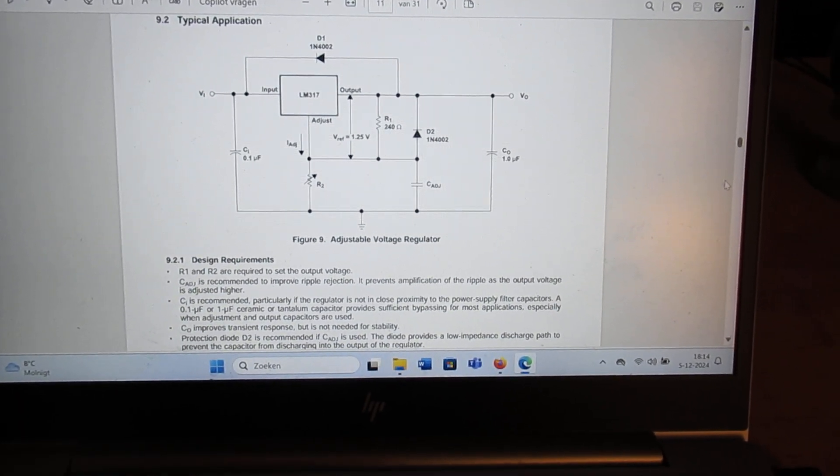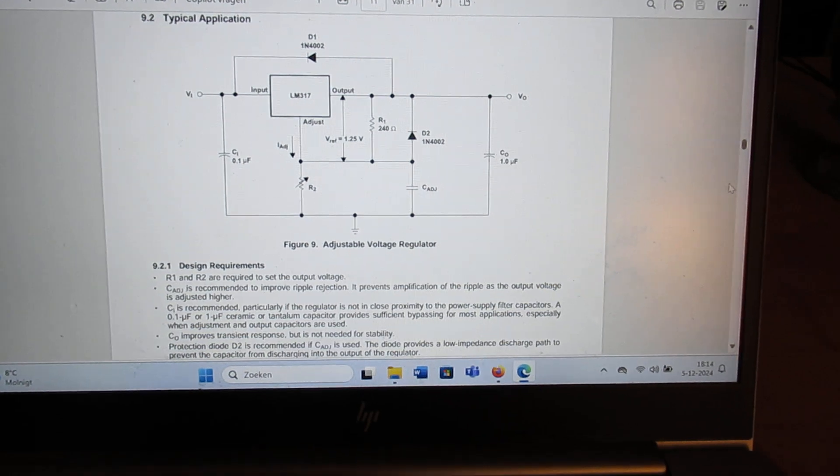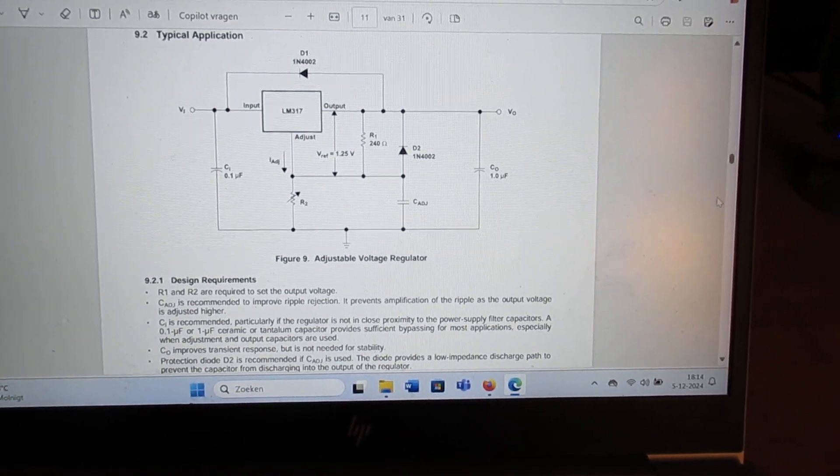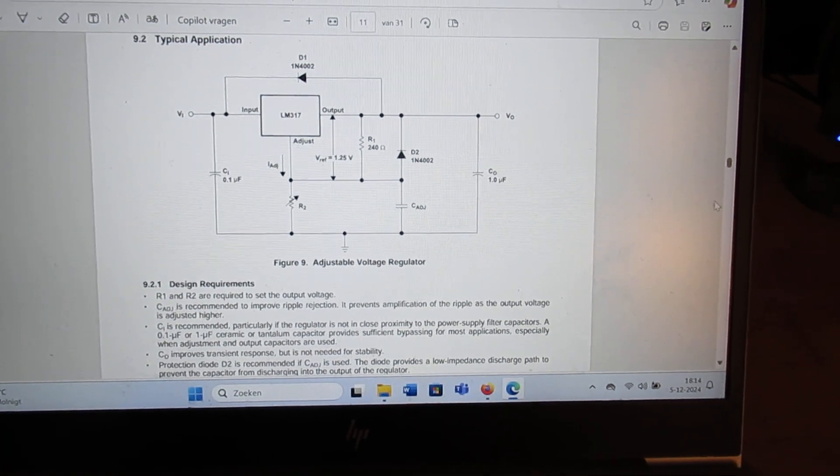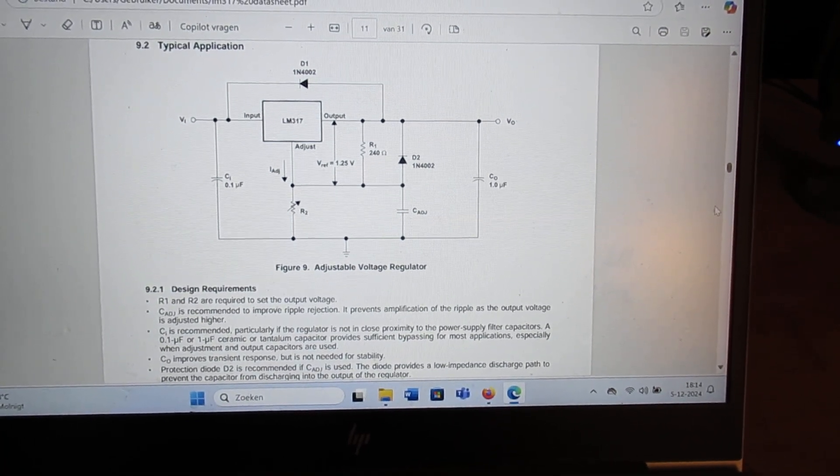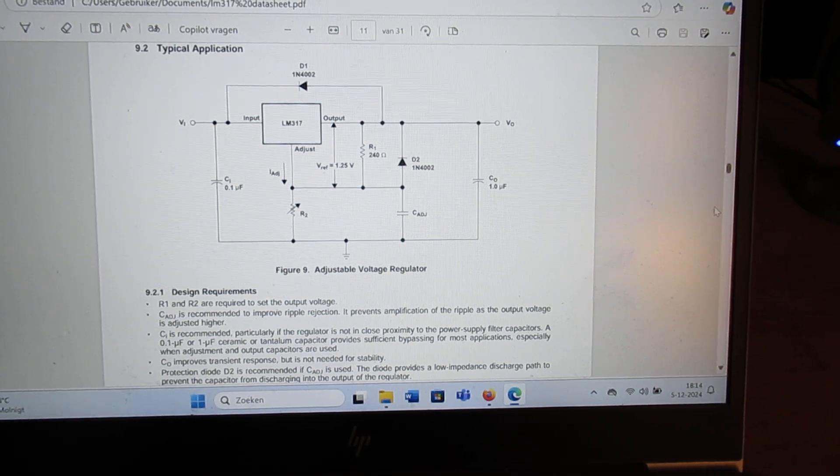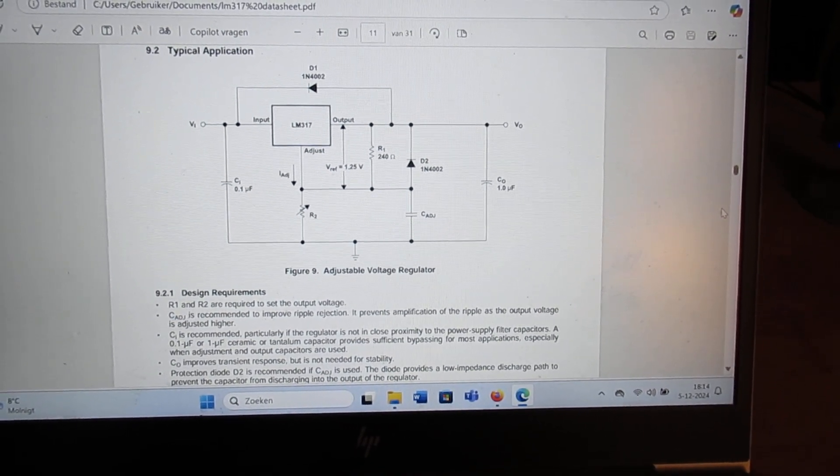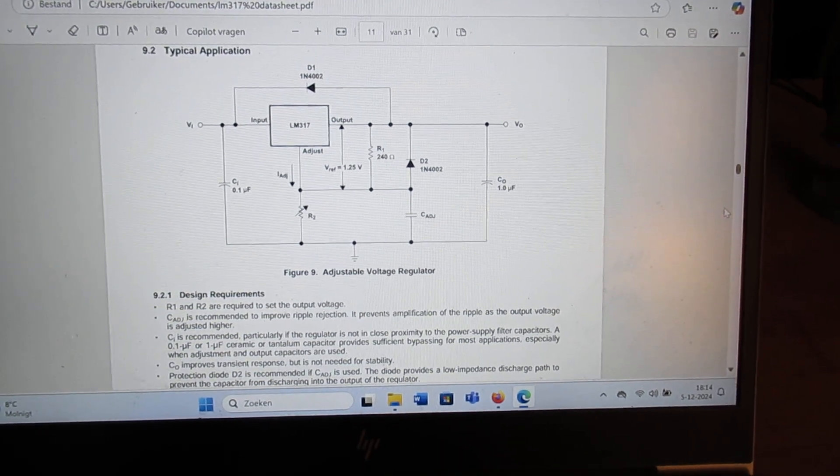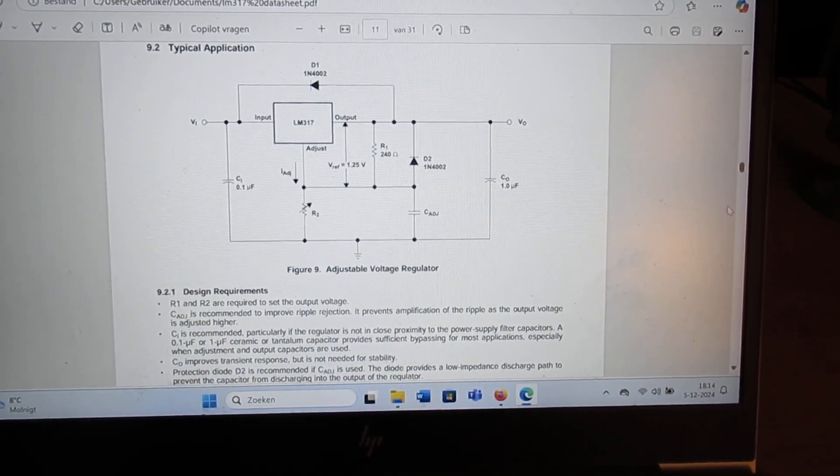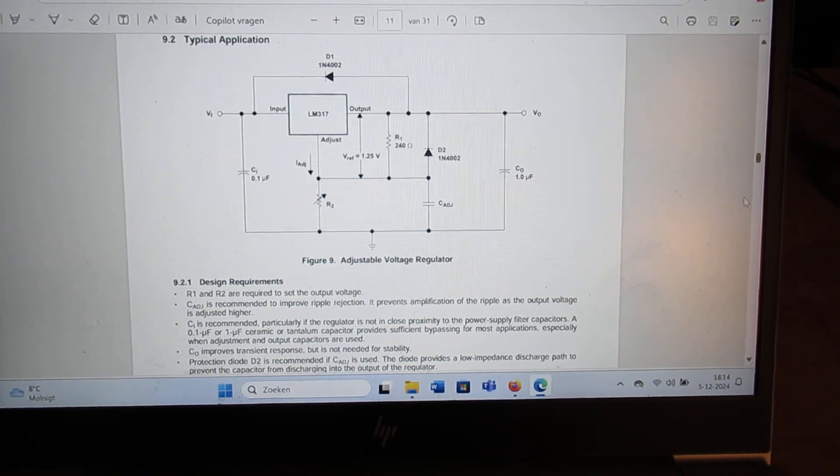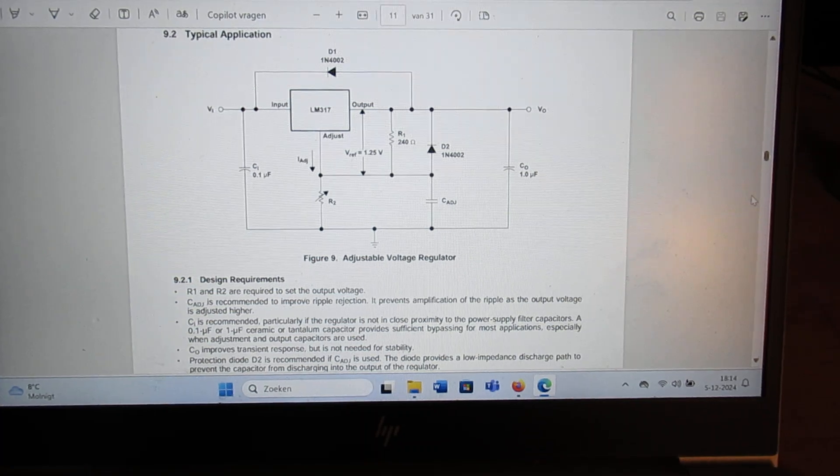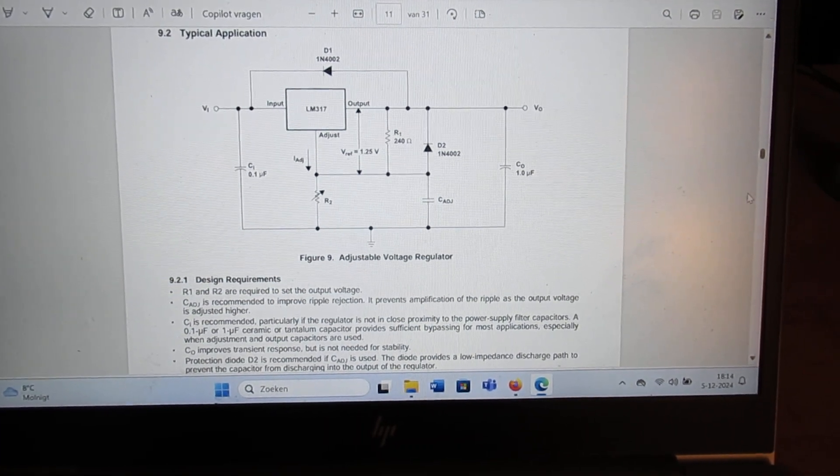When you have followed my channel you will surely know that I was busy with the 2N3055 and using it as a power transistor in a power supply, voltage and current supply. I got quite a few interesting comments about what about the LM317? Can it also be used in that way?